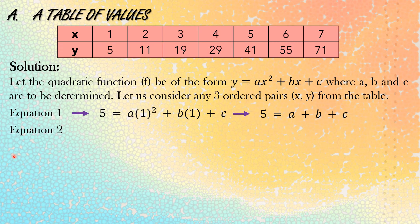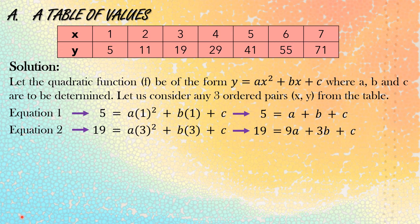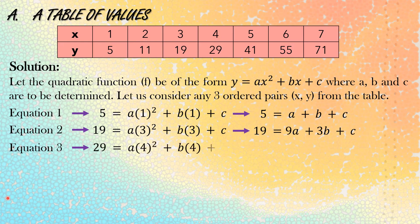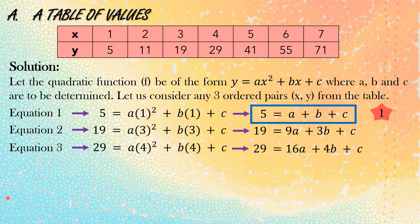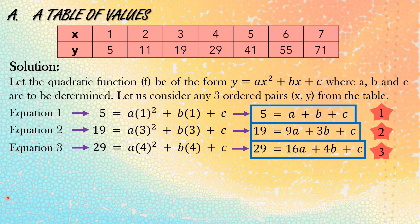For equation 2, we substitute the ordered pair (3, 19): 19 equals a times 3 squared plus b times 3 plus c, which simplifies to 19 equals 9a plus 3b plus c. For the third equation, using (4, 29): 29 equals a times 4 squared plus b times 4 plus c, which simplifies to 29 equals 16a plus 4b plus c. So now we have equations 1, 2, and 3.